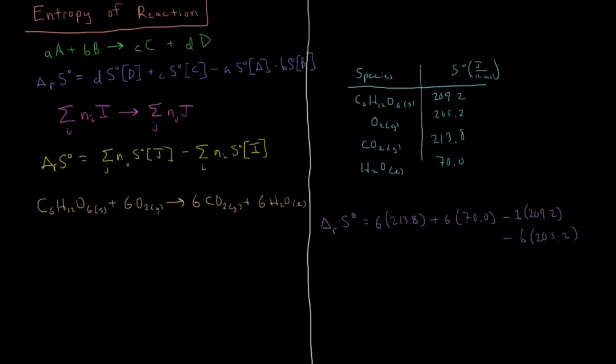So plug those values into your calculator. Here, you'll get that the standard molar entropy of reaction for the combustion of glucose comes out to be 262.4 joules per Kelvin mole.